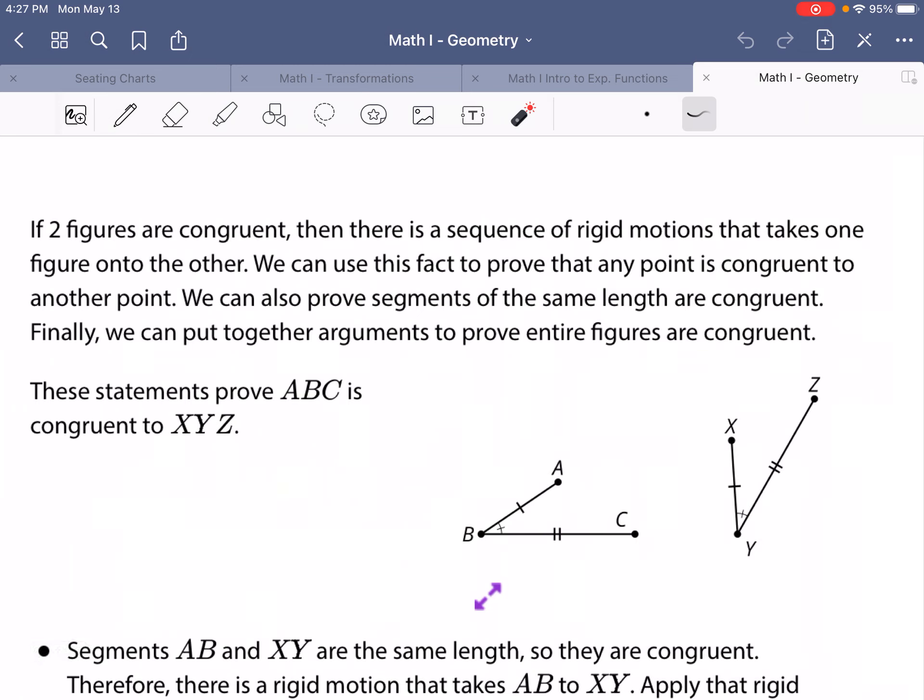So we know that if two figures are congruent, there is a sequence of rigid motions that takes one figure onto the other. We can use this fact to prove that any point is congruent to another point. We can also prove segments of the same length are congruent.